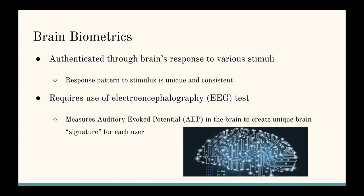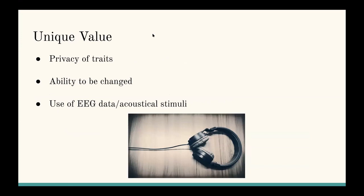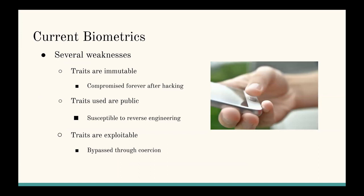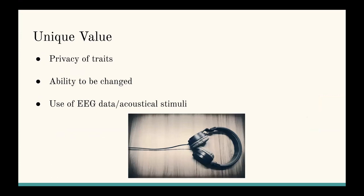These EEG tests measure a metric called the auditory evoked potential, or AEP, in a user's brain to create a unique brain signature for each user. The unique value of current brain biometrics is that it solves for all the aforementioned problems. The previous physical traits were immutable, but these brain biometric traits are private — since you cannot access these brain waves without specific advanced technology such as an EEG system. It's much harder to obtain this data.